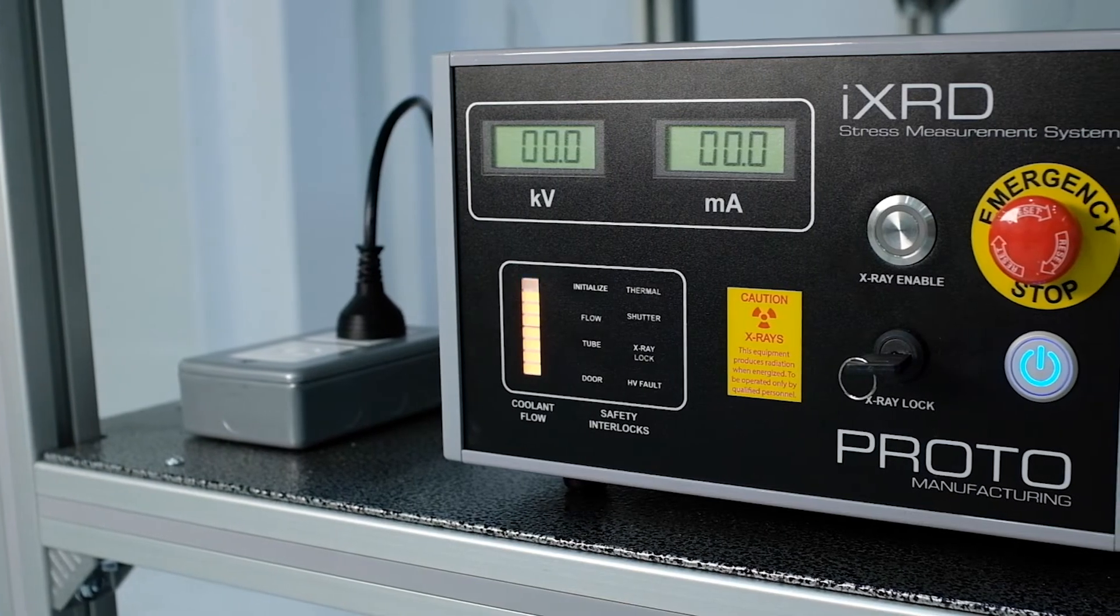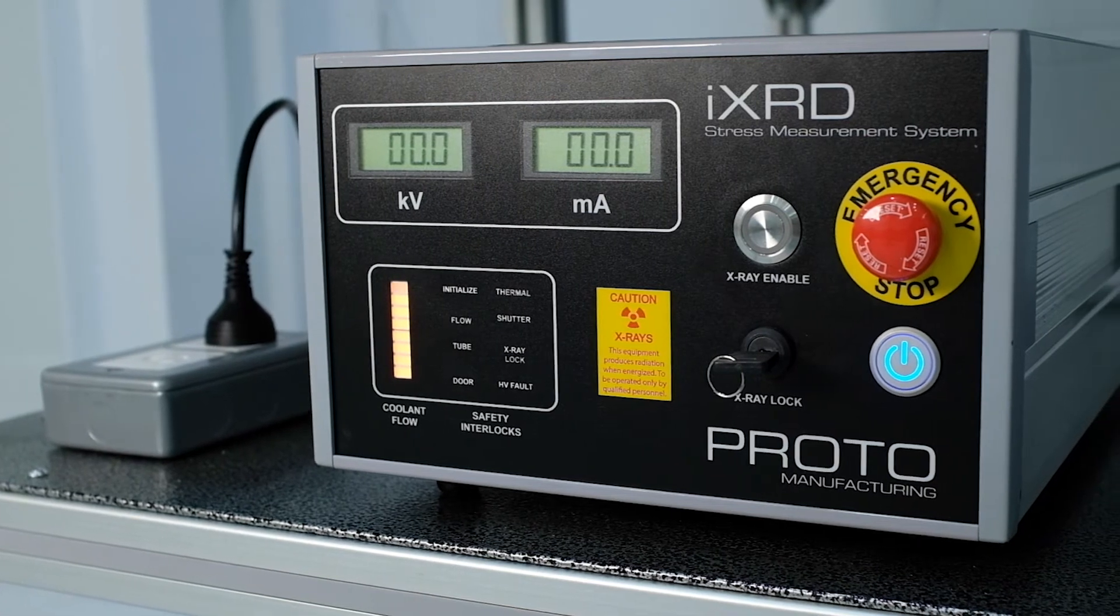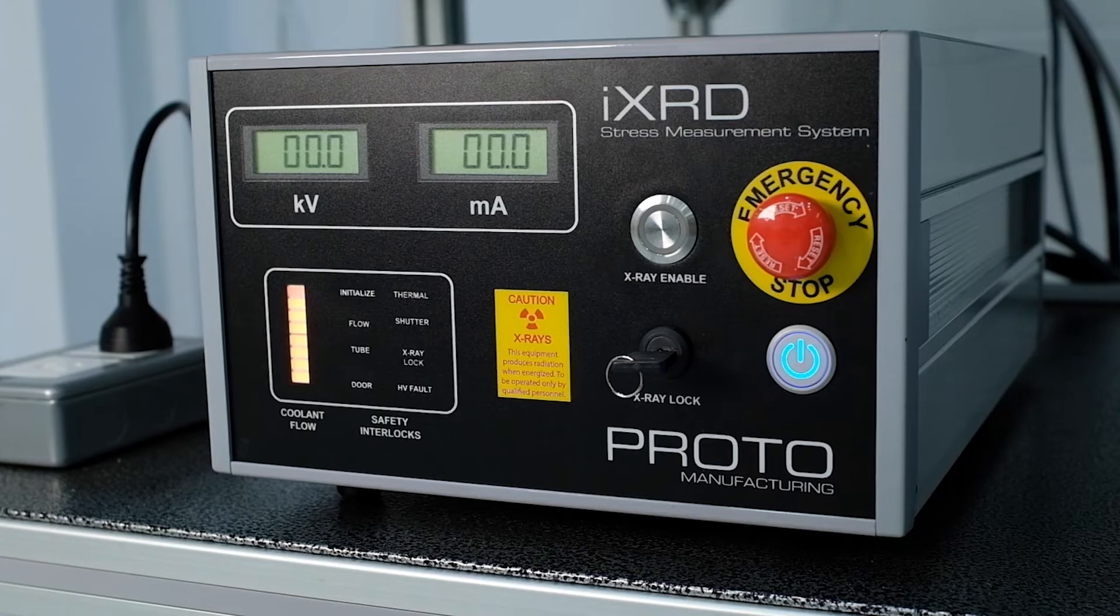The iXRD interlocking safety system has several features in place to monitor things such as coolant flow, the shutter, and to ensure that the x-ray tube is in place, as well as high voltage faults. The status of these features can be checked on the front panel.